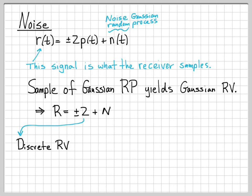The plus or minus 2 comes from the pulse that was transmitted — either a positive 2P(T) or a minus 2P(T). Since this toggles between plus and minus 2 based on the bits being sent, we can model this as a discrete random variable. It's discrete because it only takes on two values: plus 2 and minus 2. We're going to designate this discrete quantity as the random variable X.